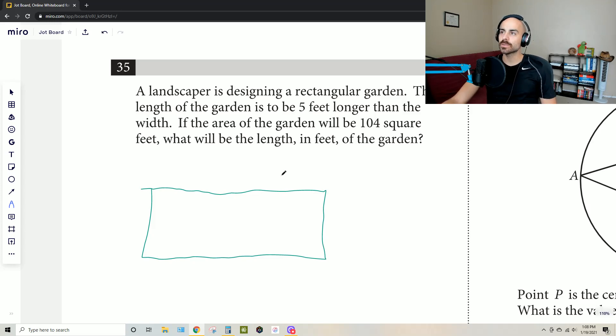The length of the garden is to be five. He's setting a rectangular garden, and the length, we'll just have this be our length, all right, is five feet longer than the width. So really, it's w plus five. We don't know what the width is either, but they're telling us that the area is 104.